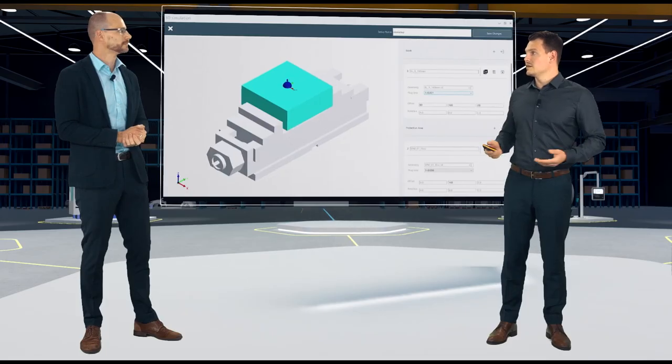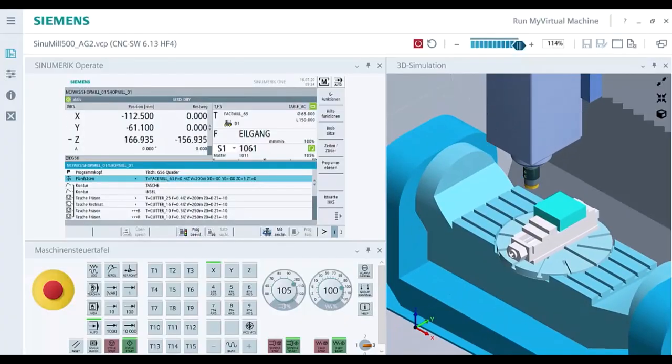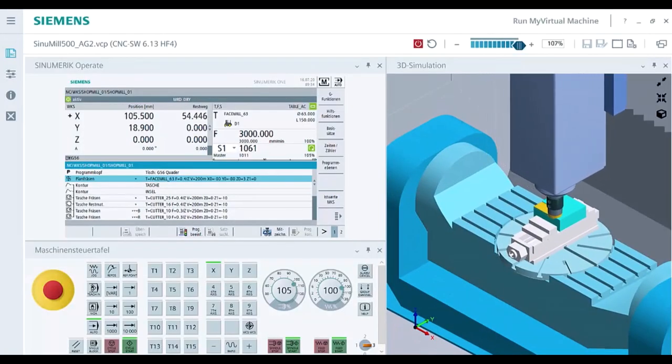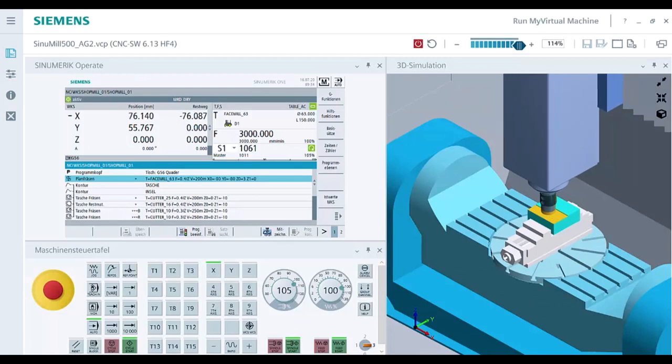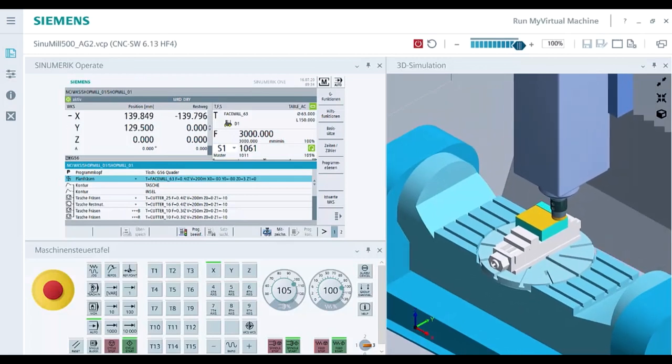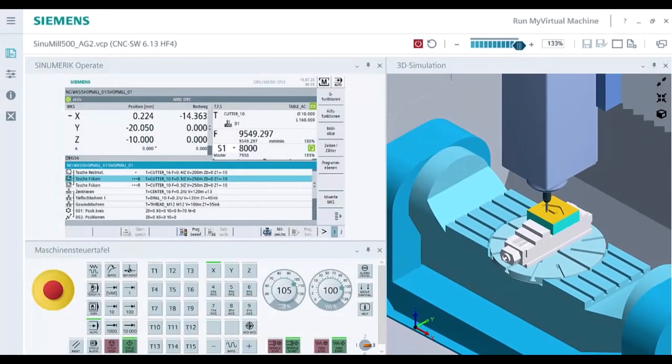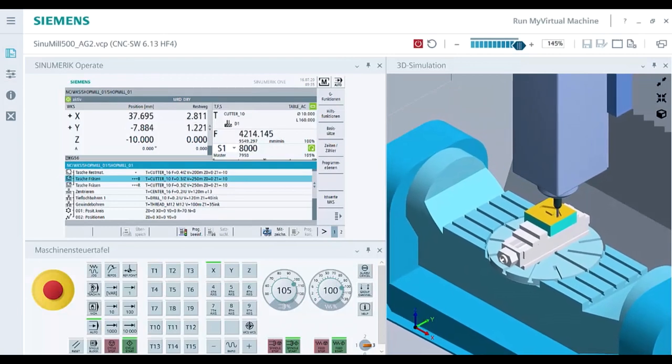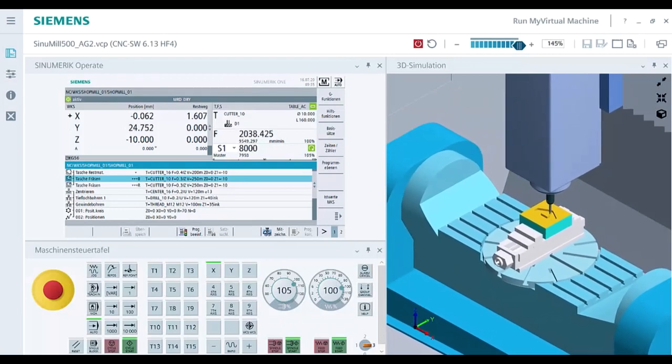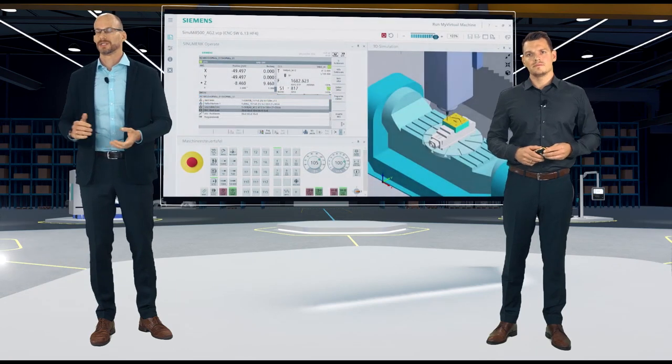Interesting. Then, let's simulate a program. With pleasure. Let's have a closer look how a machining of the NC program is displayed at Run My Virtual Machine. On the left-hand side, you see the familiar user interface of our machine, the Sinumerik Operate. On the right-hand side, you see the 3D simulation with workspace. This is exactly how you stand in front of the machine and you have a clear view of your machining process.